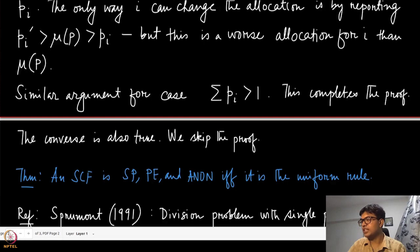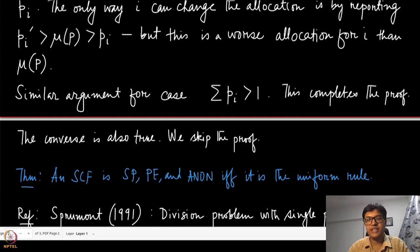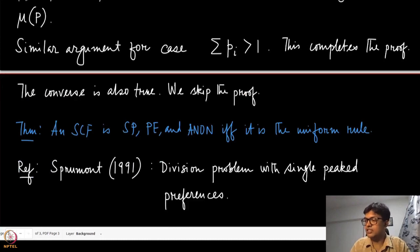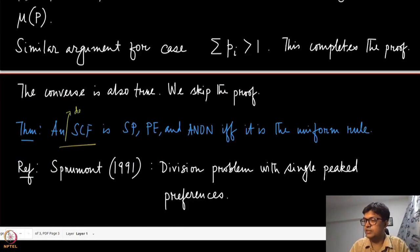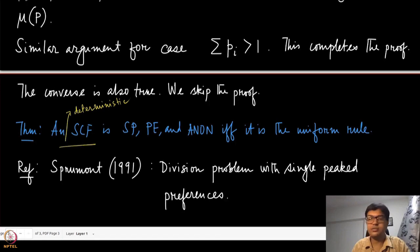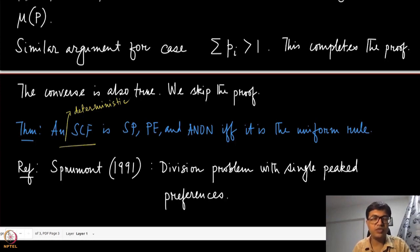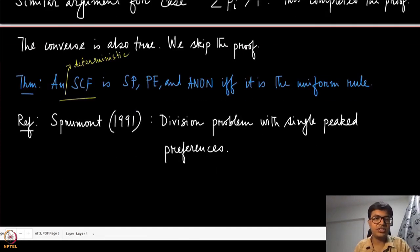This completes the proof that the uniform rule is strategy-proof. The converse is also true: for any deterministic social choice function, it is strategy-proof, Pareto efficient, and anonymous if and only if it is the uniform rule. This characterization result is due to Sprumont. The proof of the converse is more involved; if you are interested, you can refer to the original paper by Sprumont: 'A Division Problem with Single-Peak Preferences.'